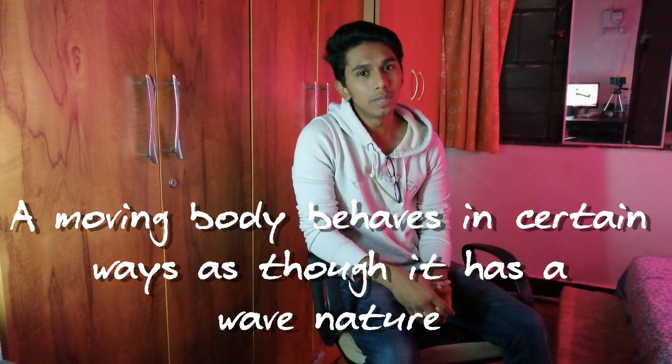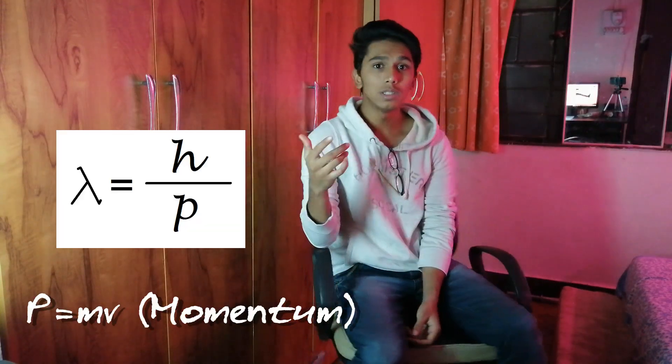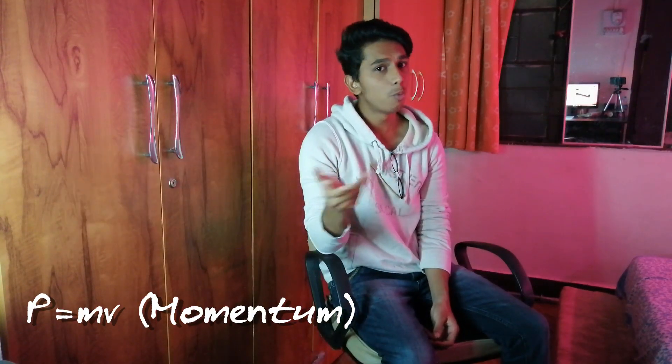But what happens when matter comes into the picture? Can matter have waves? Yes, certainly — those are called matter waves. De Broglie stated that a moving body behaves in such a way that it shows some kind of wave nature. This wave can be described by lambda equals h over p, where p is the momentum associated with the body.